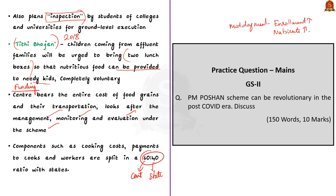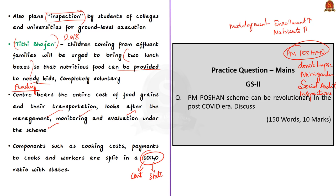In summary, the key changes under PM Poshan are: 24 lakh students in pre-primary education at government and government-aided schools will be brought under the scheme; the budget allocation will not lapse; there will be a new tree garden, mandatory social audit, inclusion of women self-help groups and farmer producer organisations, and inspection by college and university students for ground-level execution.